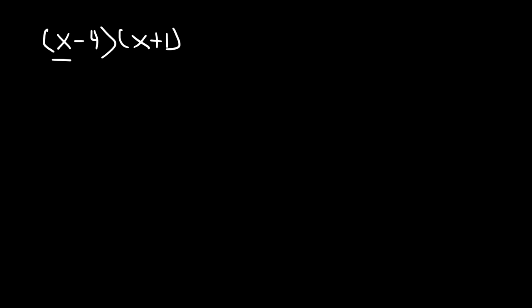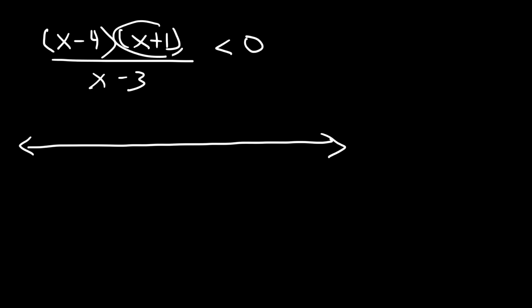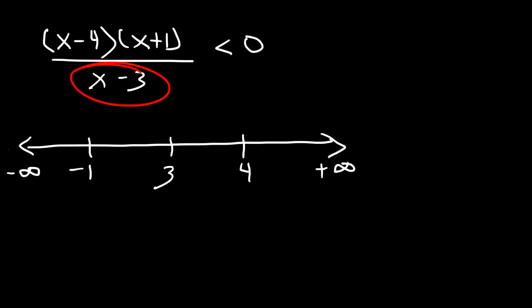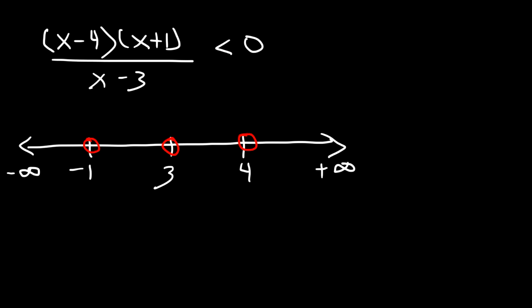Let's try another example: x minus 4 times x plus 1, divided by x minus 3, is less than 0. The points of interest are negative 1, 3, and 4, with positive and negative infinity on either end. Since x minus 3 is in the denominator, we have an open circle at 3. Notice the inequality is strictly less than 0, so in fact all points of interest will be open circles. If it were less than or equal to 0, negative 1 and 4 would be closed circles.